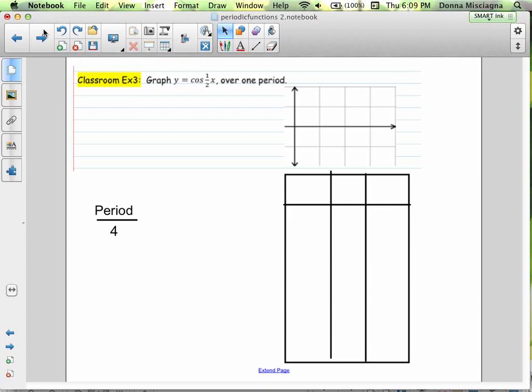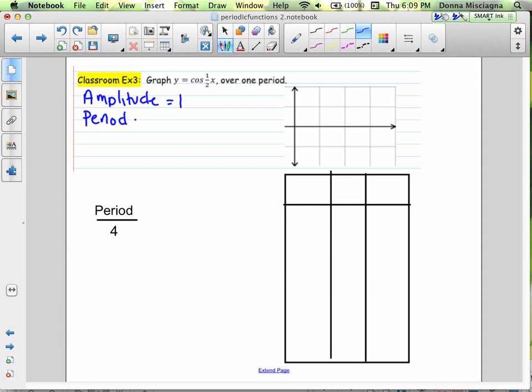All right, so now we're going to graph y equals cosine 1 half x over 1 period. Amplitude is the coefficient in front of cosine, so that is 1. The period is 2pi divided by 1 half. So that would be 2pi times the reciprocal, which is 2pi times 2 or 4pi. And there are no phase or vertical shifts. Nothing is added in this graph.